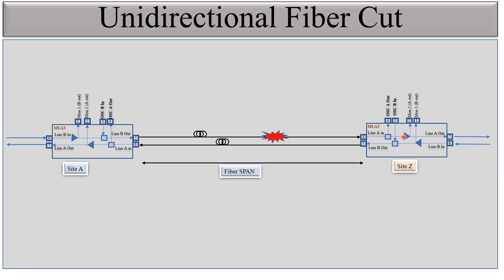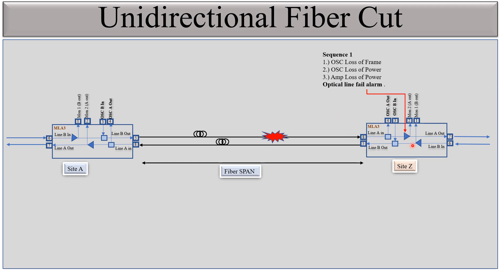When the fiber cut appears, port number 8 on the amplifier will raise an optical line fail alarm because there is no signal being received. There is also loss of frame, loss of power on the amplifier. When there is no signal receiving on port 8, there is no point in transmitting the signal from port number 5, and hence this amplifier will shut off and will not amplify the signals.